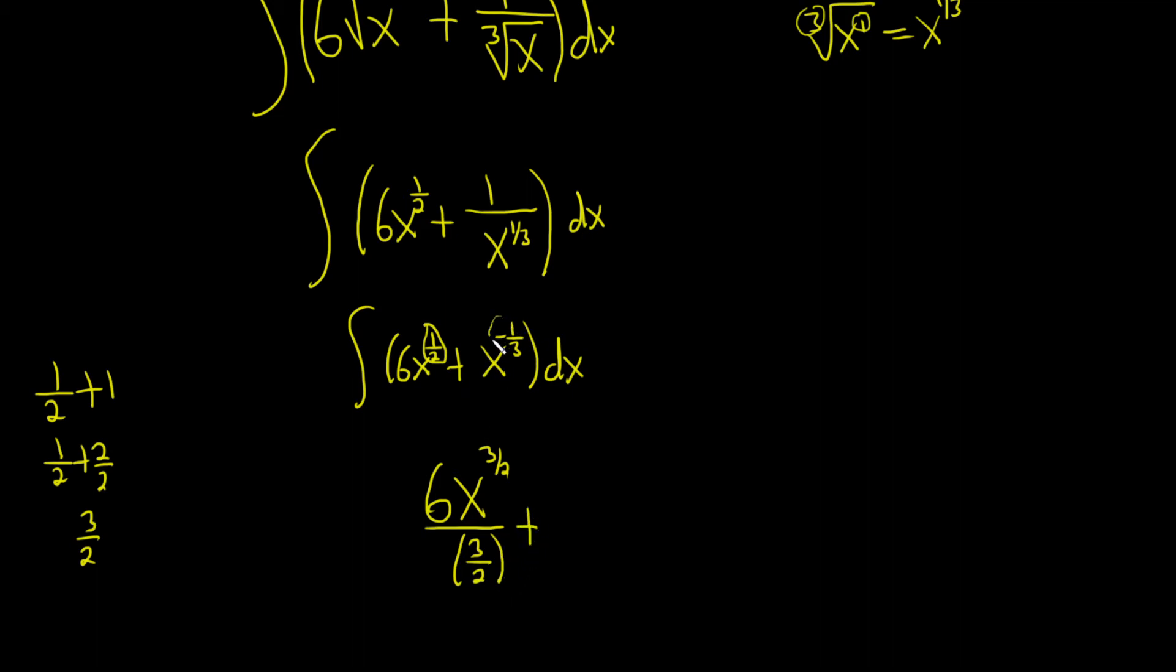Now we're taking negative 1/3 and adding 1. So negative 1/3 plus 1 is the same as negative 1/3 plus 3/3. You add negative 1 plus 3 is 2, so you get 2/3.